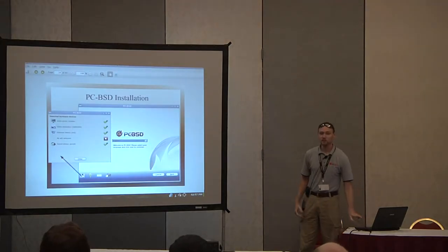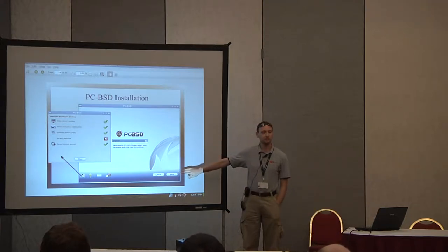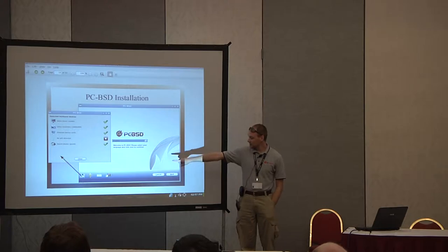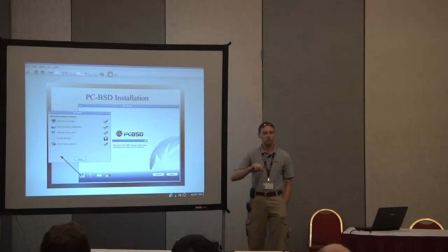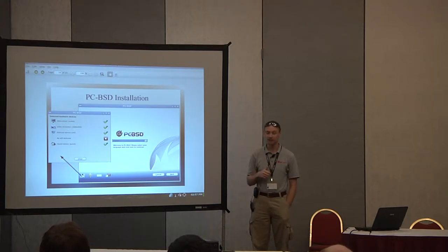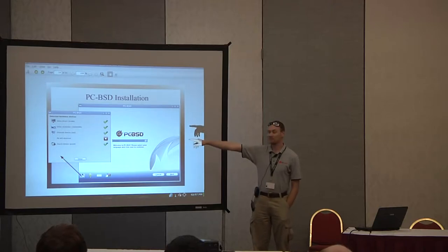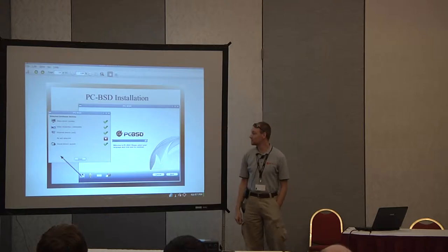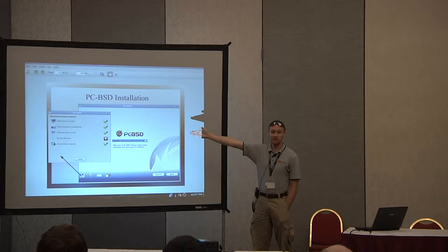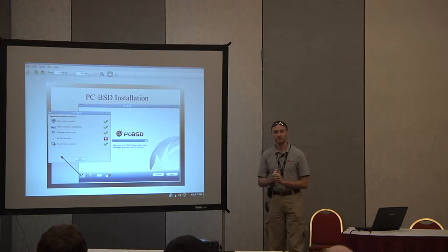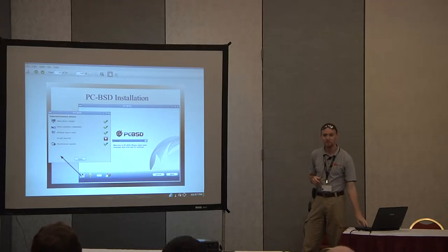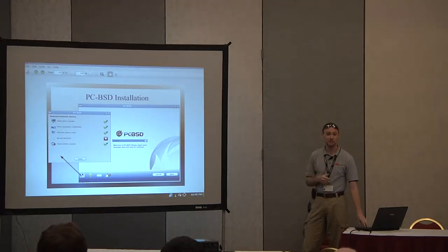Let's go through the PCBSD installer. The first screen when you load up the disk has a hardware compatibility wizard button in the bottom left corner. It checks your hardware and tells you what will and won't work. On my desktop you can see there's no Wi-Fi card, but video drivers, proper video resolution at 1600x900, Ethernet, and sound all check out. So I know ahead of time it'll all work fine before even doing the installation.